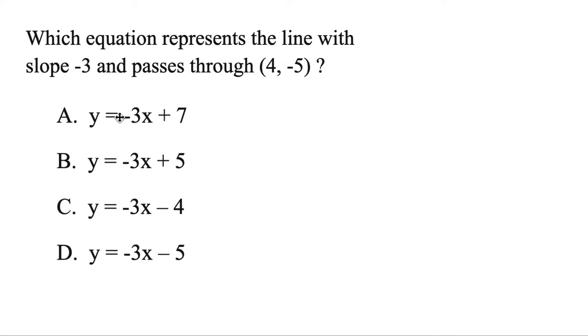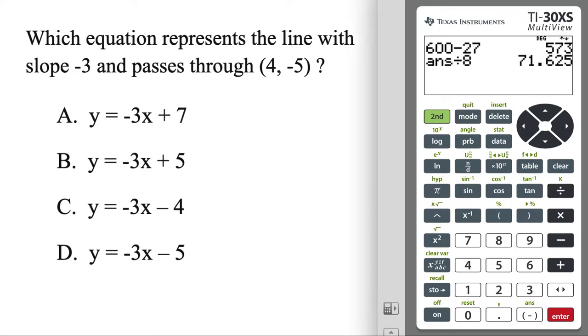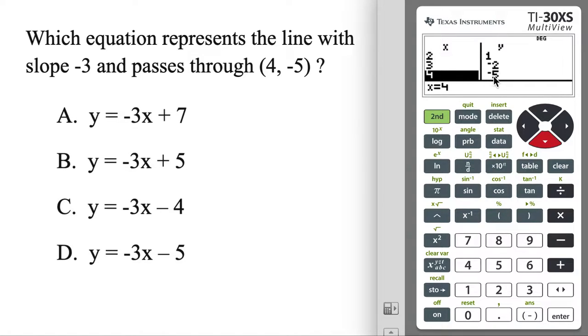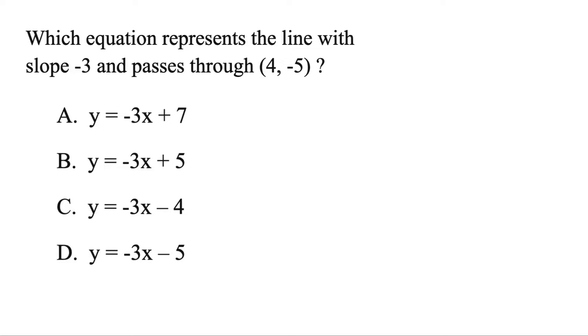When you have a bunch of answers that have y equals in them, you could always jump to the calculator and hit the table button. Then we're going to type in the first one here. So we'll do negative 3x, then plus 7. And then just keep hitting enter until you get to a table. We want to find if we pass through this point, 4, negative 5. But if we just sneak down a little bit, 4, negative 5, right there. So it's actually got to be that first one, A. So for these type, you could plug them all in and find out which one goes through that.